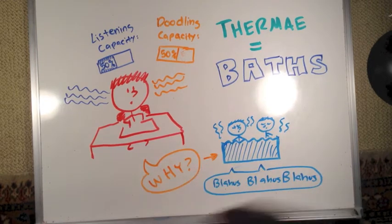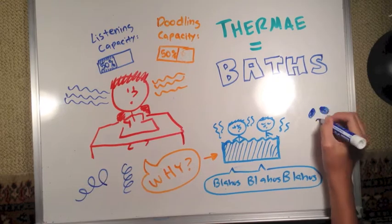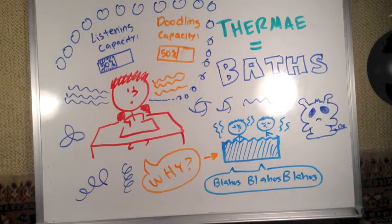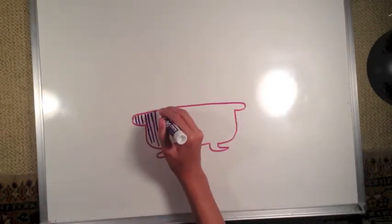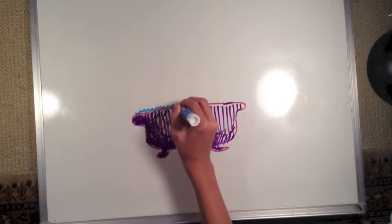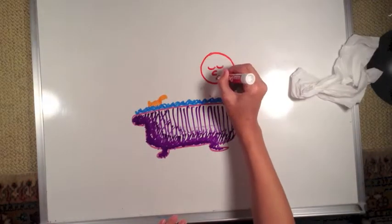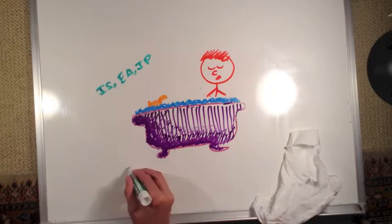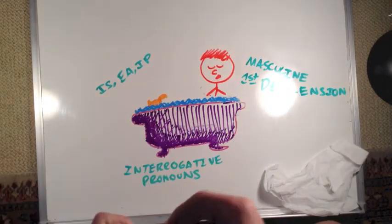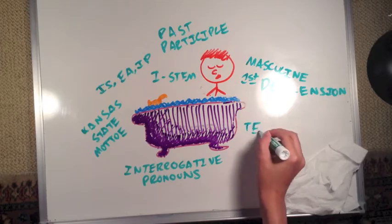So he decides to just keep on doodling onward until the end of class, and the only thing he got away from the class is that there's new types of Latin doodling. Later in the day, Marcus takes a bath, and all the complicated and stressful things about Latin surround his thoughts. Eventually he's so tired and angry that he goes into a deep, deep sleep.